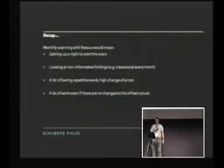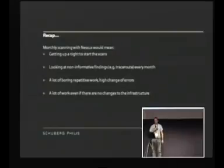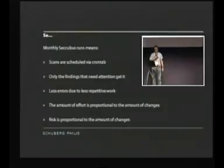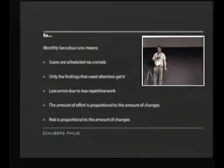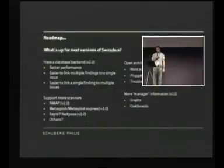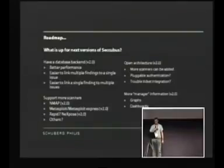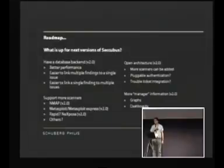By doing some automatic comparison, you can get a dramatic reduction in the time you spend analyzing your scan. If you do it by hand, it means getting up early, looking at non-informative findings, doing a lot of boring repetitive work, and having a lot of work even if your infrastructure hasn't changed. If you let Secubus do it, you schedule your scans, you only look at findings that need your attention, you have fewer errors, and a better mix between effort and the amount of change on your platform. We're currently on version 1, working on version 2, which will have better performance, a real database backend, support for more scanners like Nmap and Metasploit Express, a more open architecture, and manager-type information like graphs, dashboards, and a report writing module.